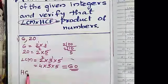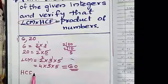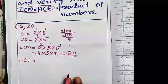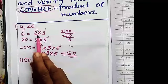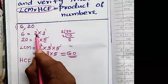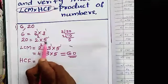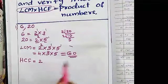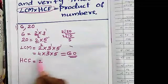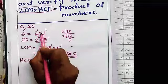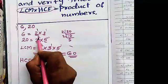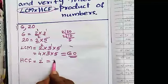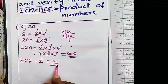Now we need to find the HCF of 6 and 20. For HCF, select the common prime factors. The only common prime factor is 2. Then select the lowest power: 2 to the 1 versus 2 squared, so we select 2 raised to 1. Therefore, HCF equals 2.